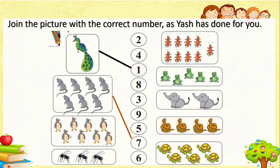Here we count 1, 2, 3, 4, 5, 6, 7, 8 — eight penguins, so our line connects 8. Then we count 1, 2, 3 — three objects, so we draw a line to 3. Moving to the next side, we count 1, 2, 3, 4, 5, 6, 7, 8, 9 — nine objects, so we draw a line to 9.